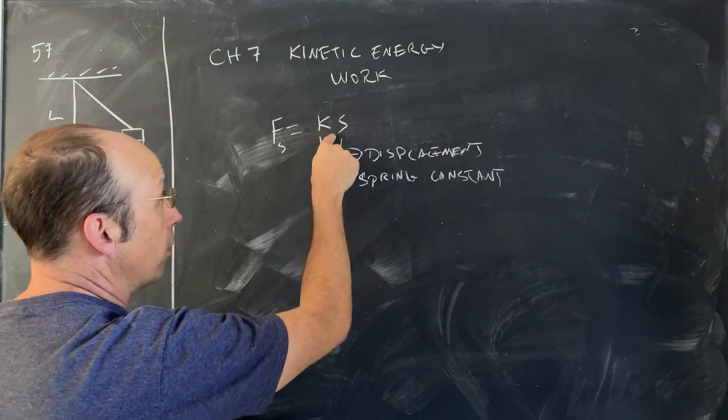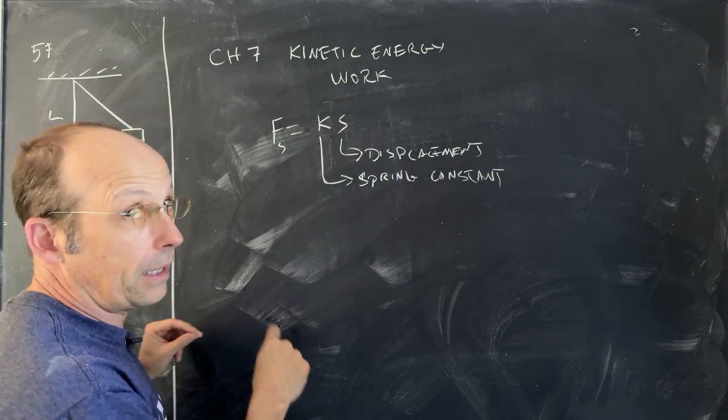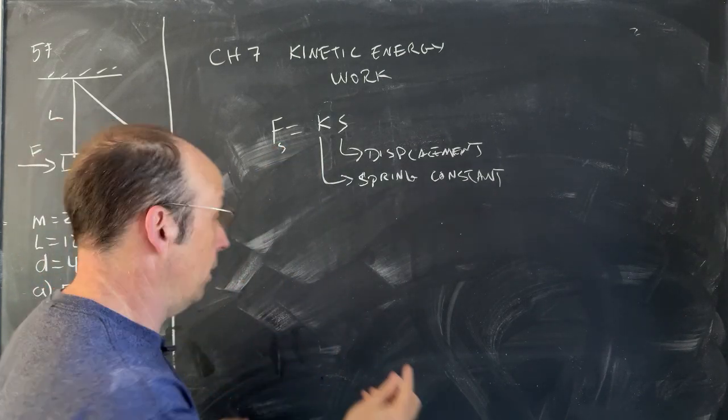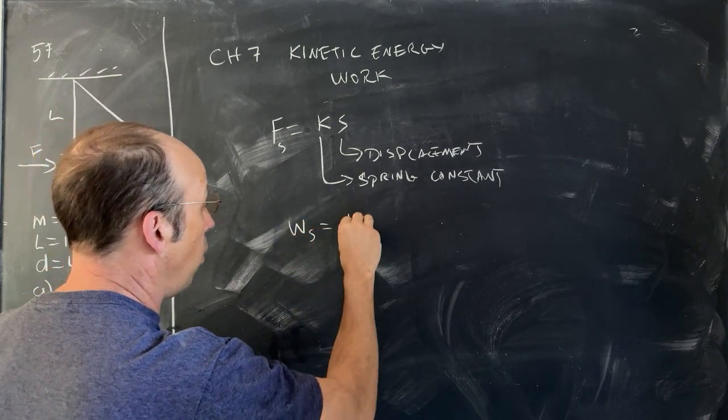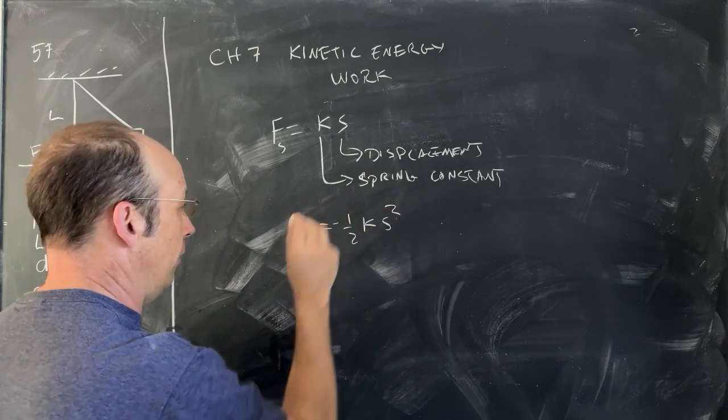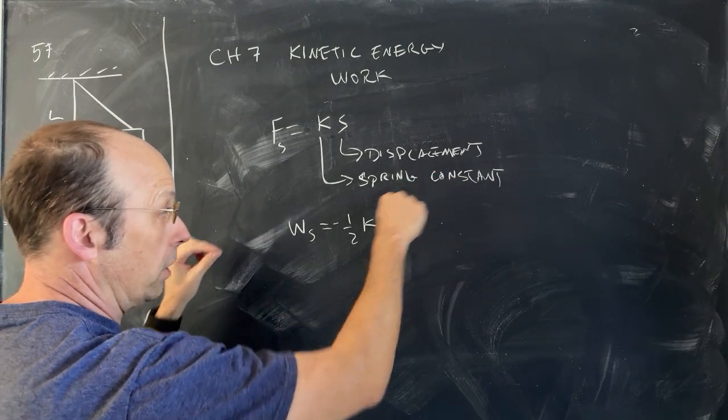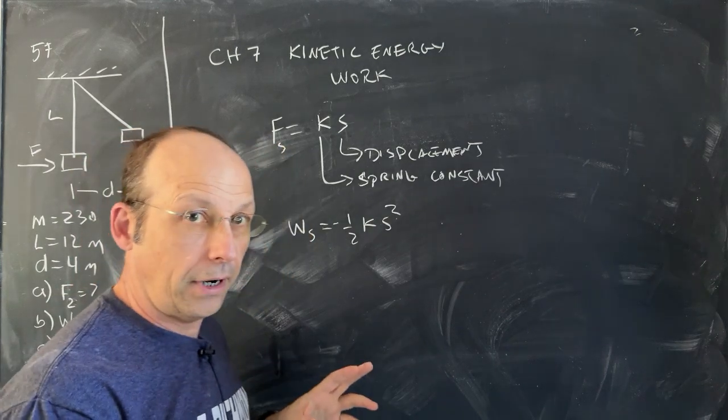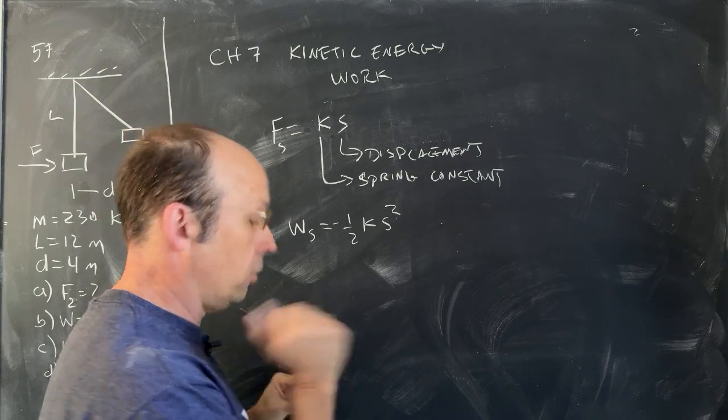The force due to a spring is k times s, where s is the displacement, the amount that is stretched or compressed, and k is the spring constant. And so don't put the negative sign there because we didn't write this as a vector. It's possible to write it as a vector, but let's just not worry about that right now. And since this is a variable force, as s increases, if you pull a spring, the work done by that force is going to be, you have to integrate. So we get the work done by a spring is going to be W = -½ks².